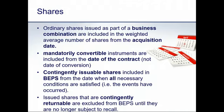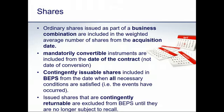Where shares have already been issued but are contingently returnable — for instance, callable if certain profit warrants are not achieved — those shares are excluded from basic EPS and treated as if not issued until there is no longer any outstanding event that could give rise to a recall. This is effectively the opposite of contingently issuable shares. Be conscious of the different trigger points for each scenario set out in IAS 33.